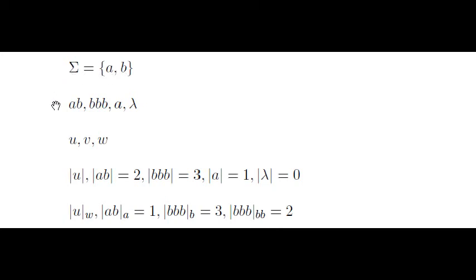A word built on a certain alphabet is a list of symbols from the alphabet. For example, ab would be a word containing the symbols a and b. We also have bbb as a word built on this alphabet, as well as a.